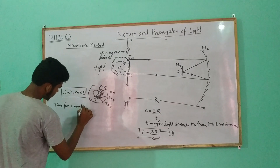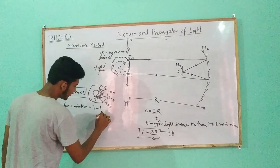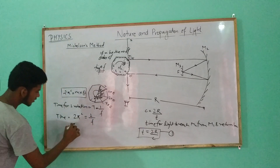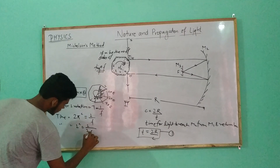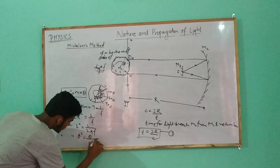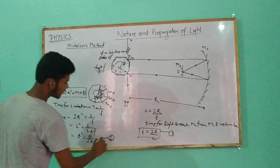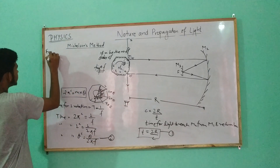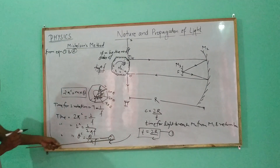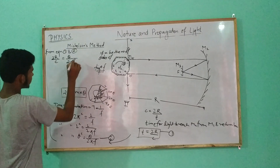Time for one rotation: frequency is the reciprocal of time, so time for one rotation is 1 by f. Time for 1 radian is 1 by 2 pi f. Time for theta radian is theta divided by 2 pi f. This is equation 2.